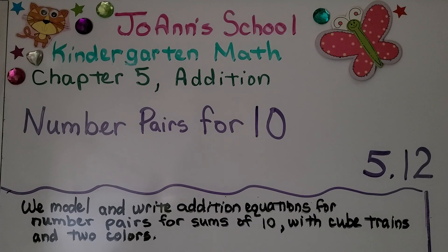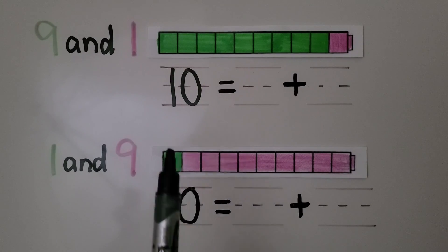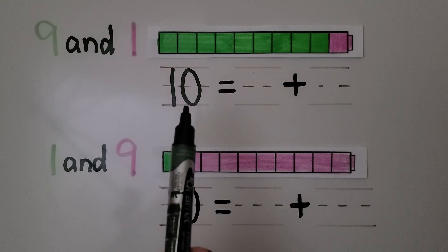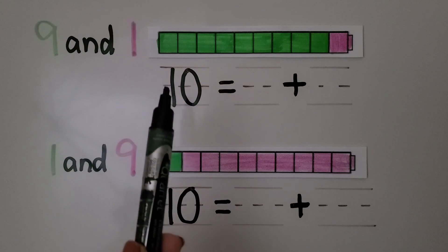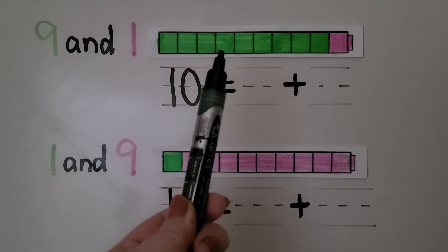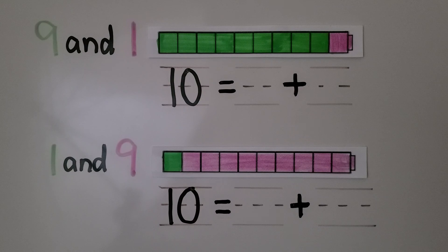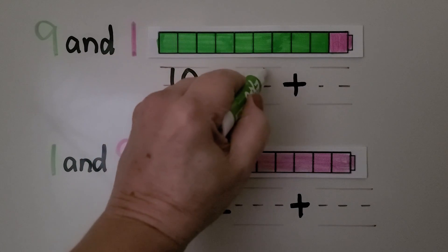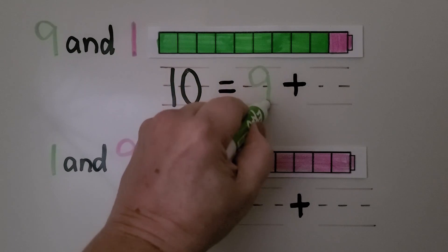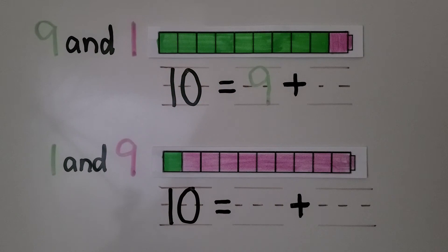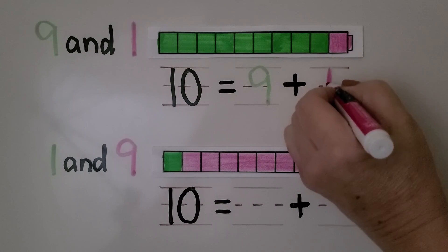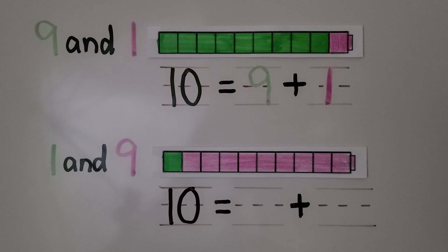Lesson 5.12: Number pairs for 10. In this lesson we model and write addition equations for number pairs with sums of 10 using cube trains and two colors. When we connect nine green cubes and one pink cube we have ten cubes in all. We can count them: one, two, three, four, five, six, seven, eight, nine — there are nine green cubes. We can write nine for the nine green cubes and one for the one pink cube. Ten is equal to nine plus one.